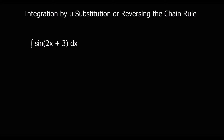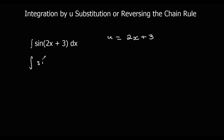To integrate by u substitution we take the bracket and change it to a u. So we're going to say that u is equal to 2x plus 3 in this case. That will give us the integral of sin u.